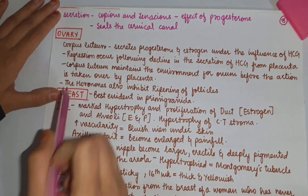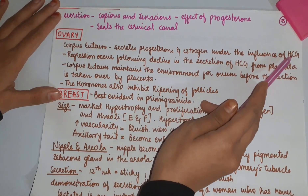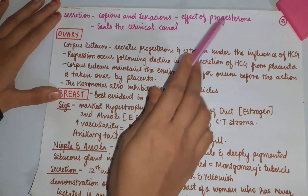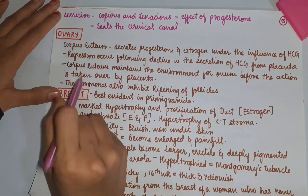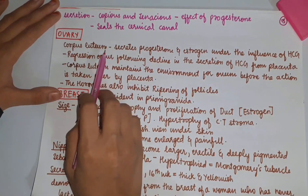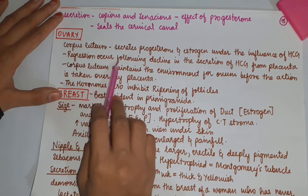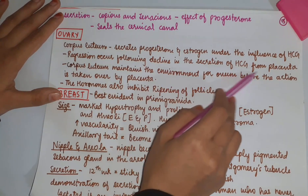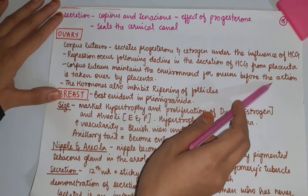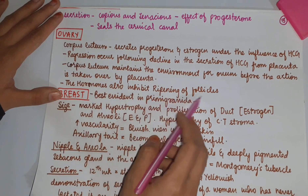Ovary: Corpus luteum secretes progesterone and estrogen under the influence of HCG, which is secreted by the placenta. Initially, HCG is secreted by the syncytiotrophoblast. Regression of the corpus luteum occurs following decline in the secretion of HCG from the placenta. The corpus luteum maintains the environment before the action is taken over by the placenta. The hormones also inhibit ripening of follicles.